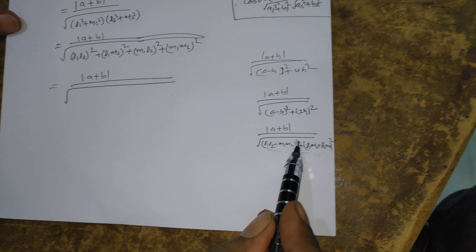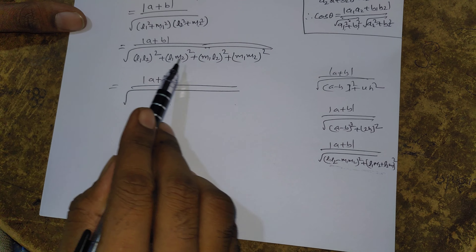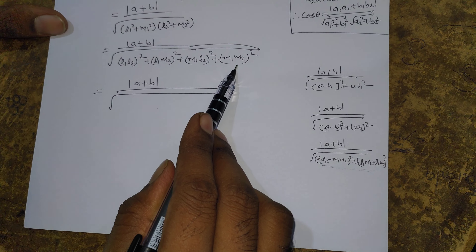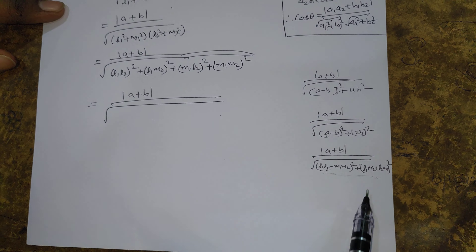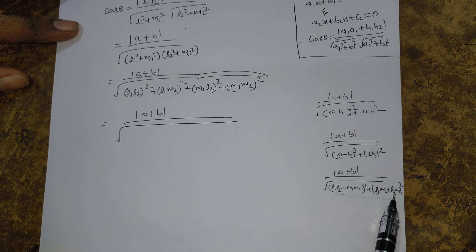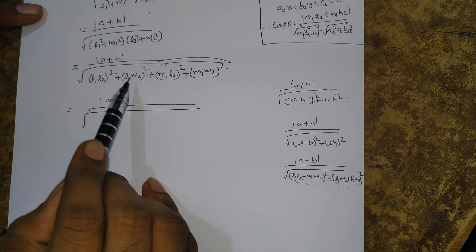To verify: (L1·L2 - M1·M2)² + (L1·M2 + L2·M1)². Expanding (L1·L2)² + (M1·M2)² using the identity: a² + b² = (a - b)² + 2ab.